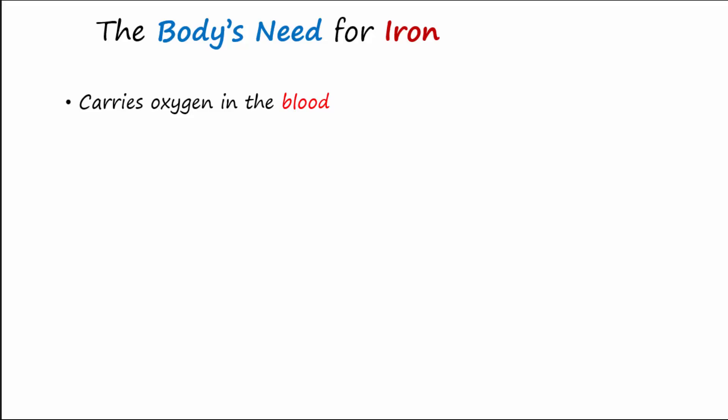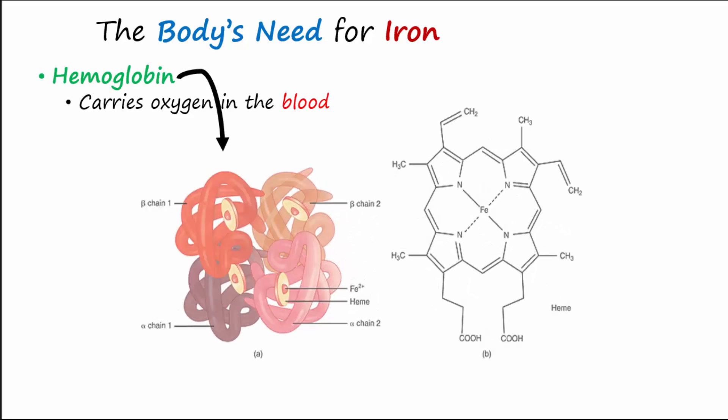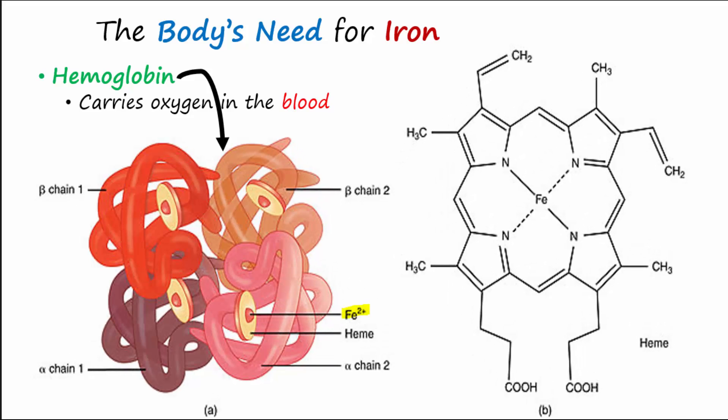For oxygen transport, iron is an important component of the hemoglobin inside red blood cells. One hemoglobin molecule consists of four total globin chains: two beta globin chains and two alpha globin chains, which are polypeptide strands. Each hemoglobin molecule also has four heme molecules.